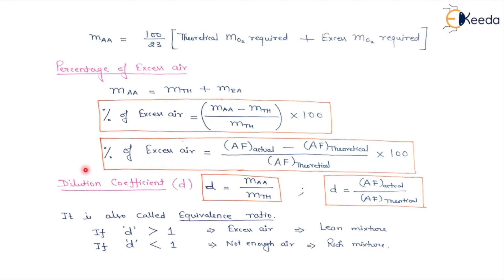There is one term called the dilution coefficient or equivalence ratio. This is equal to mass of actual air divided by mass of theoretical air, or equivalently, actual air fuel ratio divided by theoretical air fuel ratio.